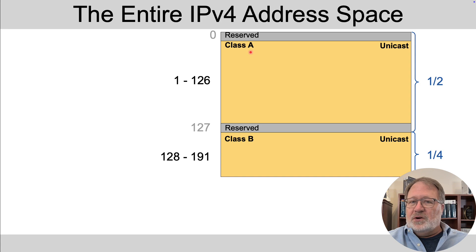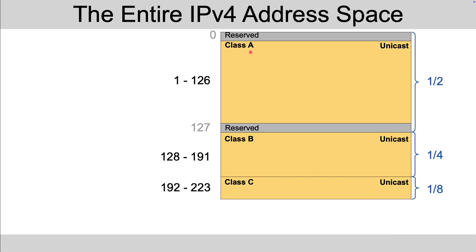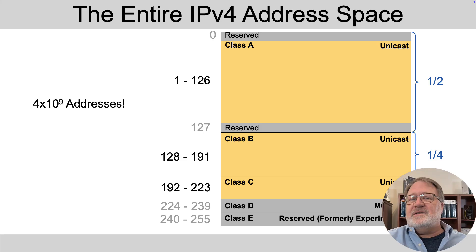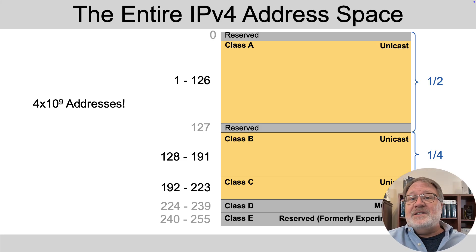Then there was another chunk reserved for Class B addresses, and another chunk for Class C unicast addresses. You can see the relative sizes for the numbers of addresses. Those took up 7/8ths of the available addresses with IPv4. There were a couple of other classes allocated. In total, the entire IPv4 address space totaled a little over 4 billion addresses, with a little under 4 billion available as unicast addresses.